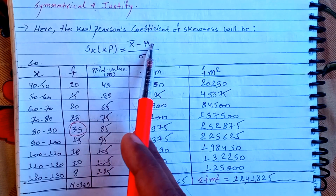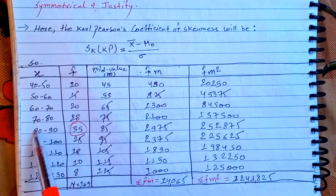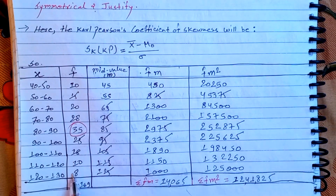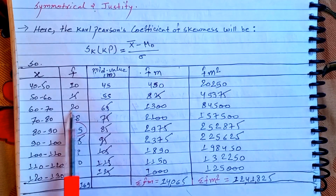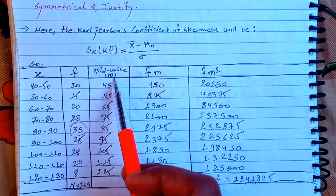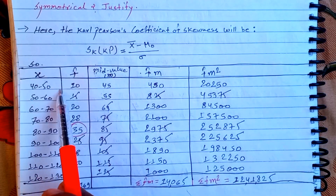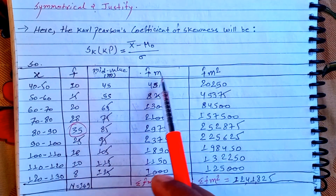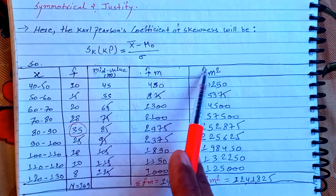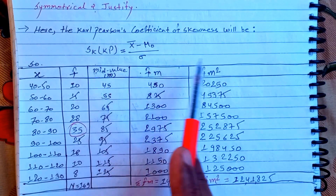This is the mean, mode, and standard deviation. This is continuous data, so we need the frequency and mid-values. The mid-value column will be 50 or similar. We calculate the total data by subtracting mid-values, giving us the f×m column, and then the total of f×m.